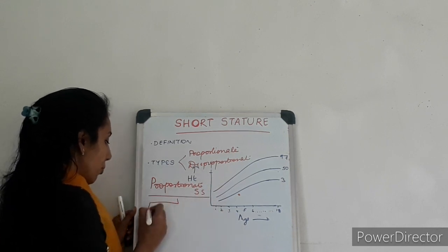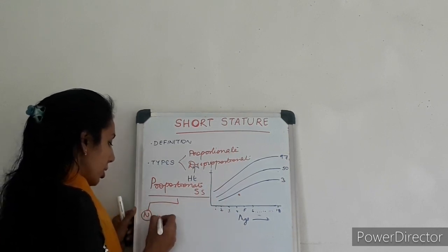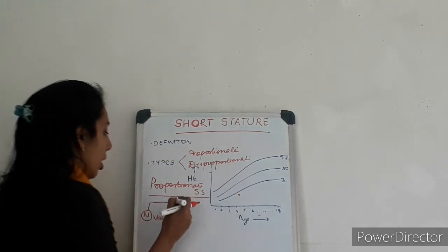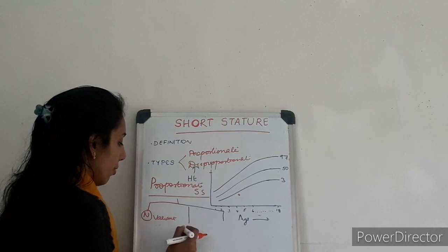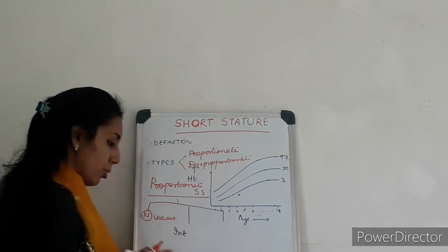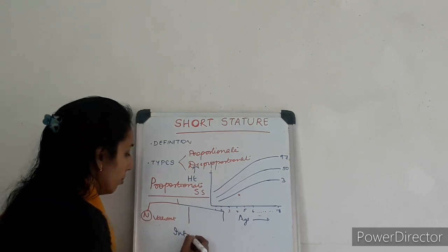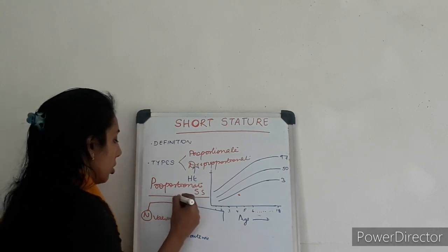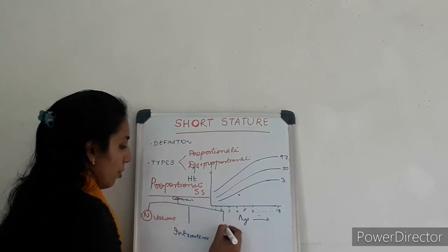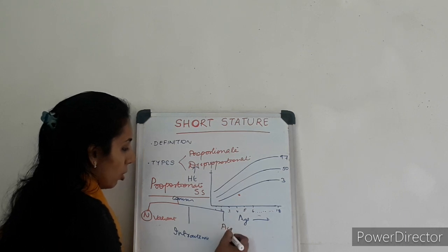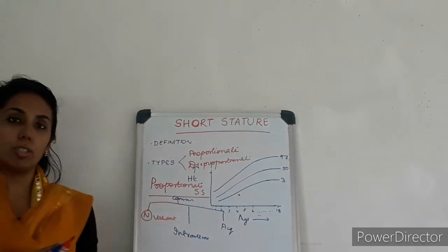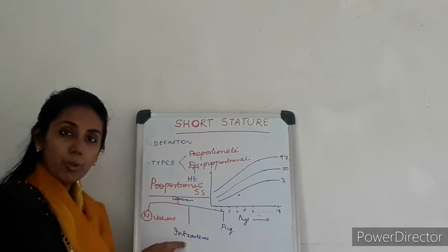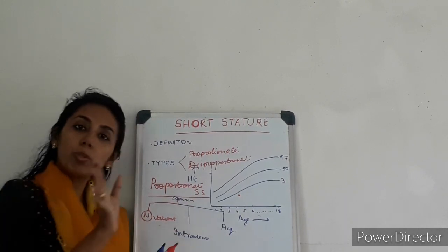Coming to the types of proportionate short stature, there are different varieties. One is normal variant. Then we have intrauterine problems. Causes can be many — we can have acquired causes or postnatal causes. So causes can be normal variants, intrauterine causes, or acquired or postnatal causes.